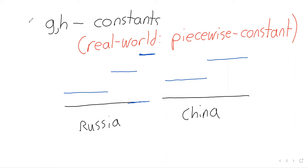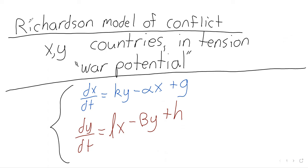This system of differential equations is actually linear — a rare beast. Most real-world interesting differential equations aren't linear, but here we have a constant in front of X and a constant in front of Y. It isn't homogeneous, though, because we have that constant term without an X or Y.